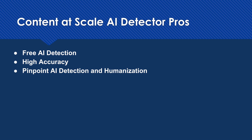Let's talk about some of the things I really like about the Content at Scale AI Detector. First off, it is pretty accurate — about 98.3% accurate according to Content at Scale's website. I will say I can fool it. As an editor, I can take a piece of AI text and fool it, and I can fool it with some of the GPTs I've made. But overall, it will generally detect AI in your text, so keep that in mind.